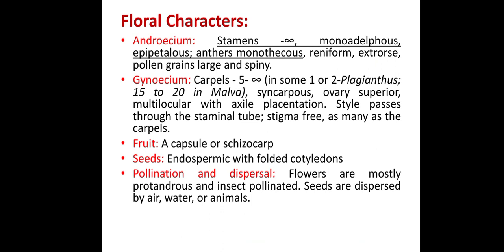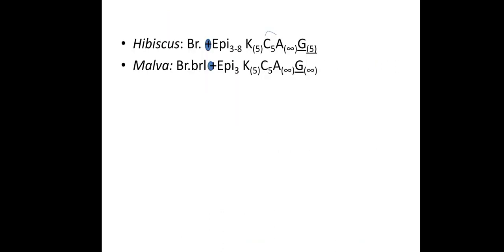Pollination and dispersal: flowers are mostly protandrous and insect pollinated. Seeds are dispersed by air, water or animals. This is the floral formula of Hibiscus and Malva.